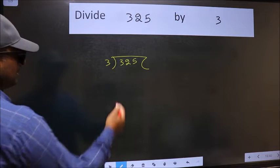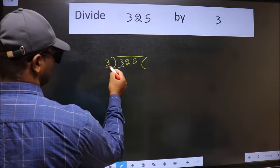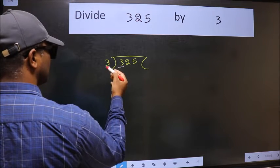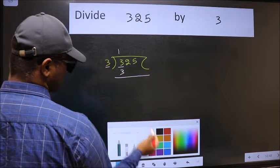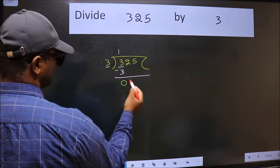Next. Here we have 3, here also 3. When do we get 3 in 3 table? 3 once 3. Now we should subtract. We get 0.